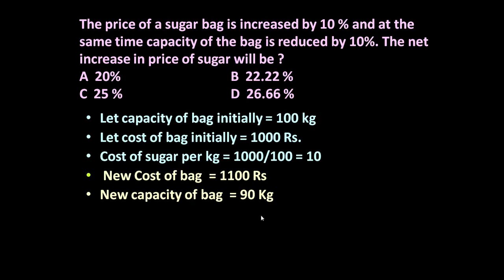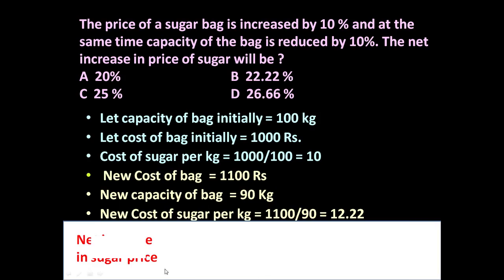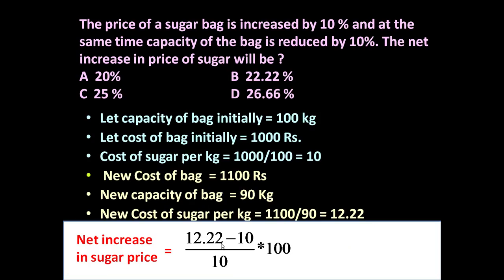Now let us calculate the new price of sugar. The new cost of sugar per kg is equal to 1100 divided by 90, which equals rupees 12.22 per kg. Initially the cost of sugar was rupees 10 per kg, now it has increased to rupees 12.22 per kg. So the net increase in sugar price is equal to (12.22 minus 10) divided by 10, multiplied by 100, which equals 22.22 percent.